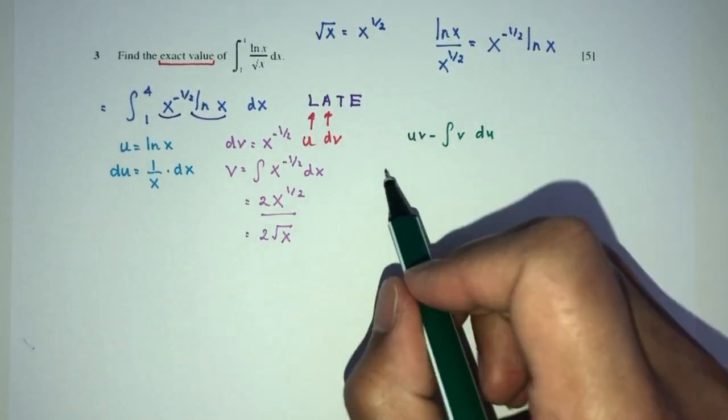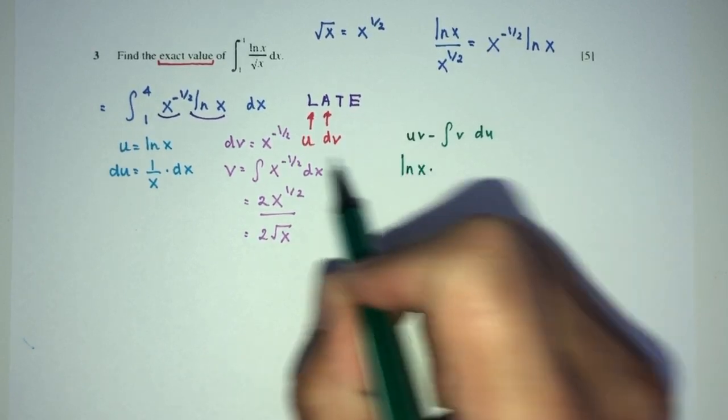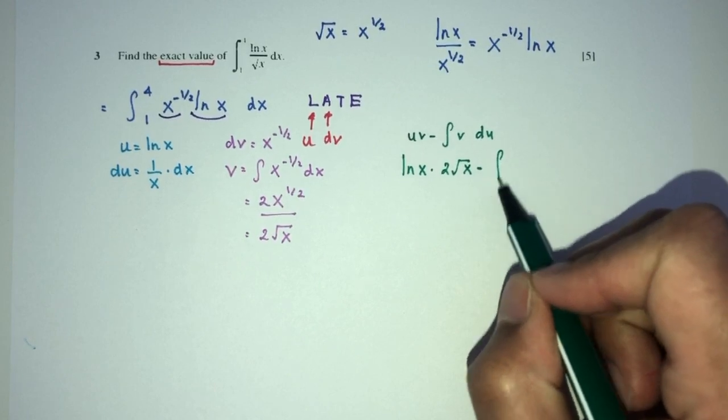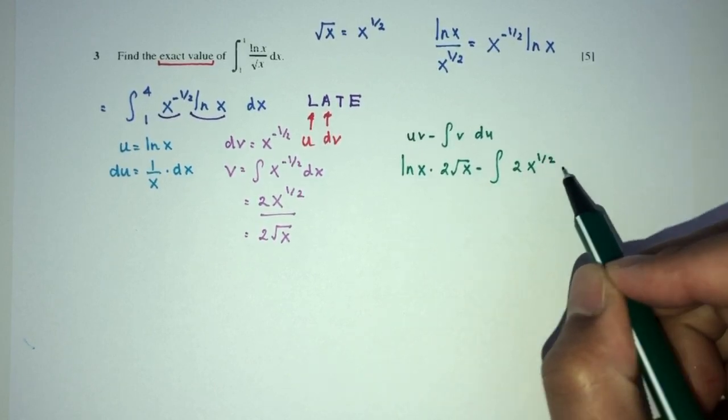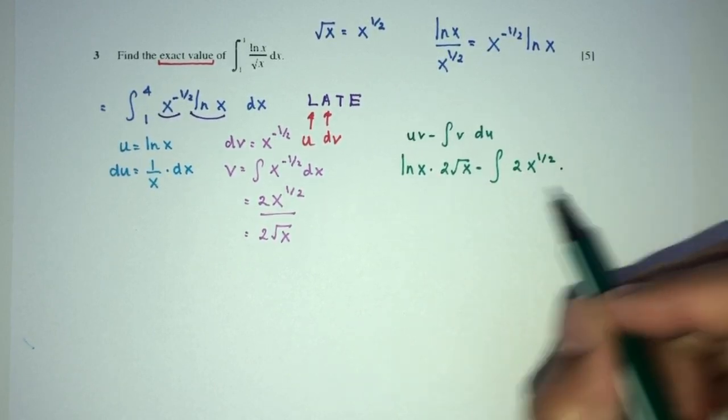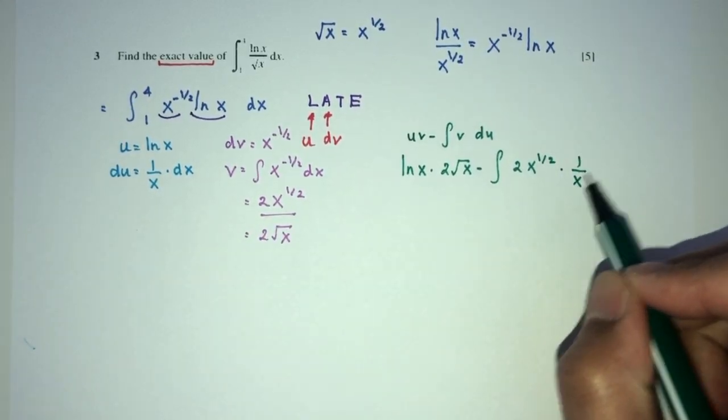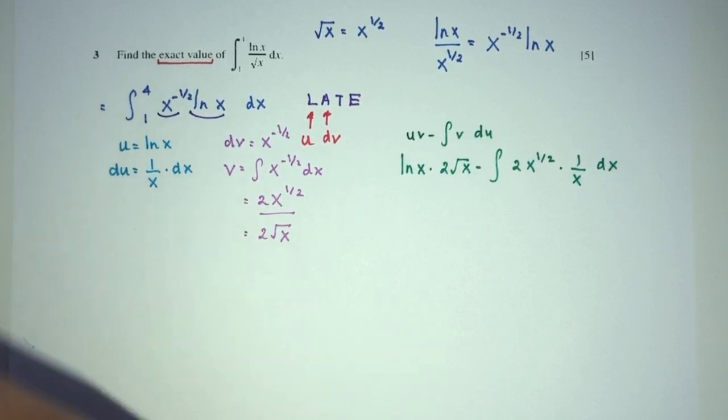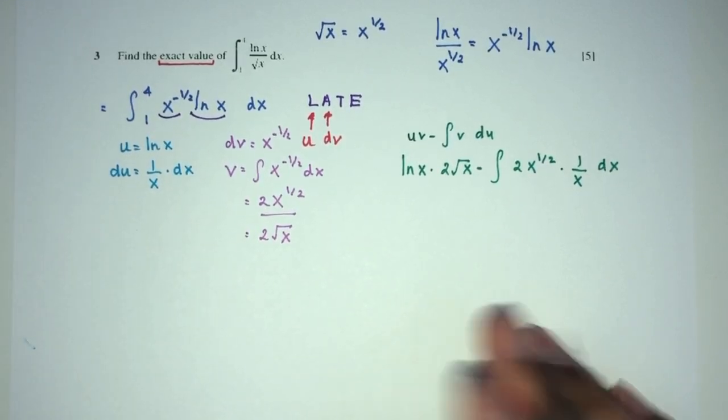Now, uv, u is this one times v, v is this one. Minus integration of v, which is 2 root of x. And then du has been seen to be the value of 1 over x dx. Now, what can we do? Simplify.